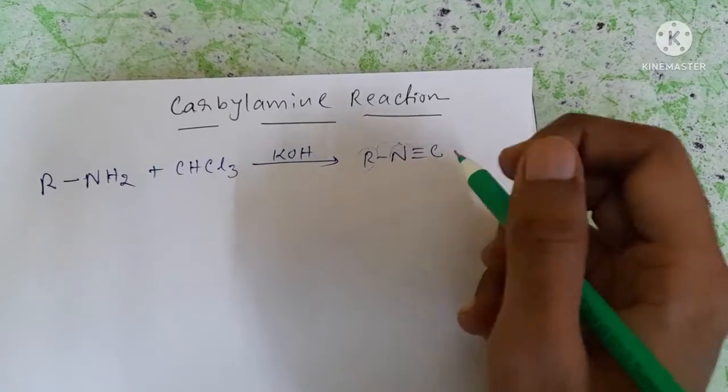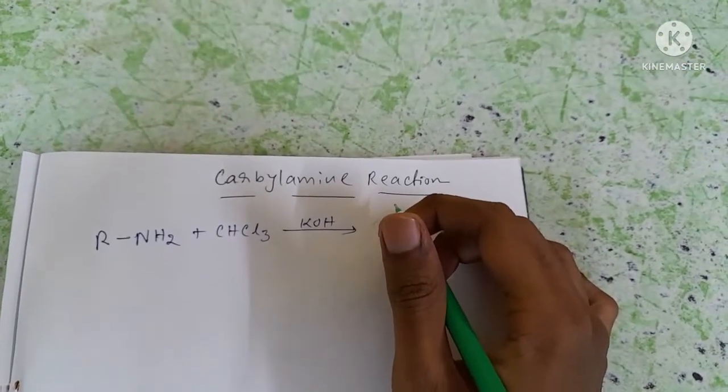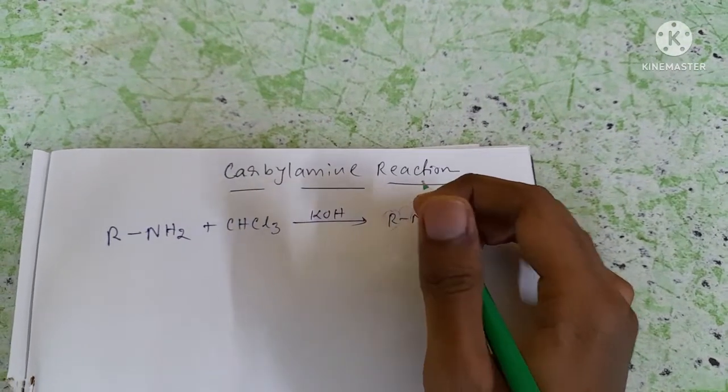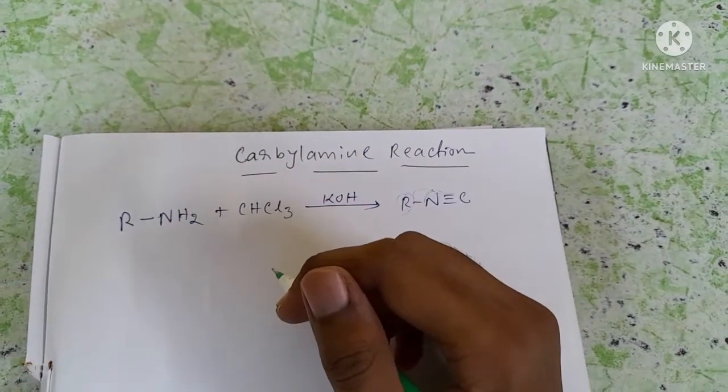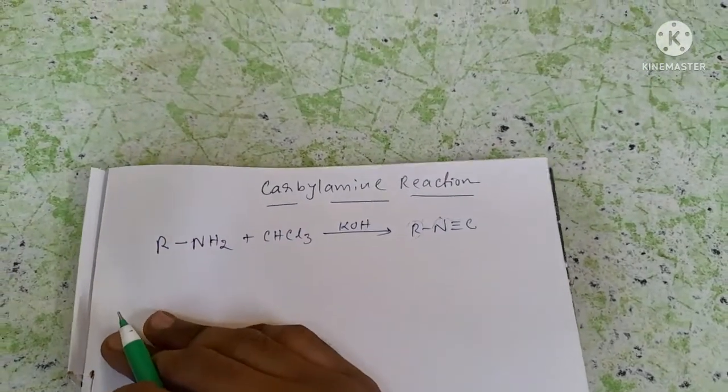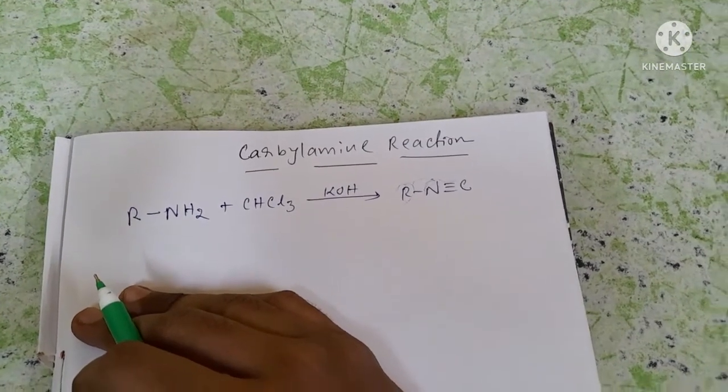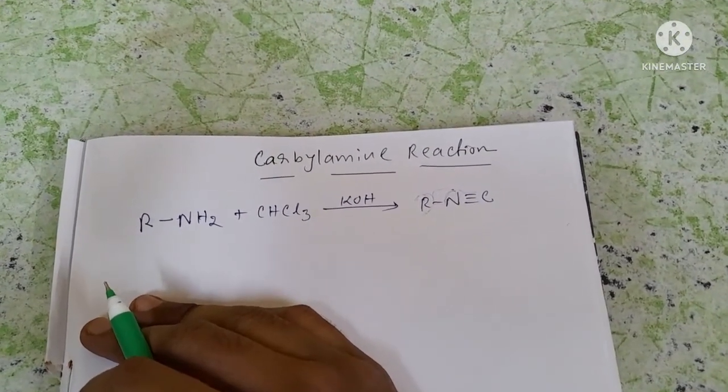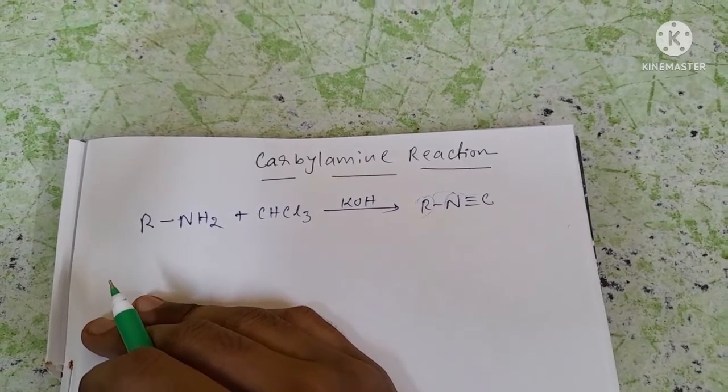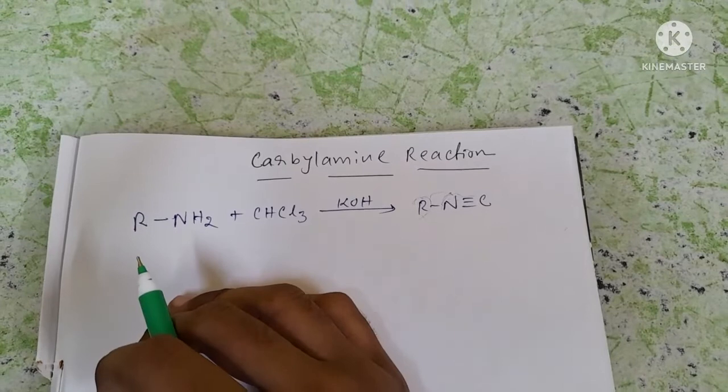The intermediate of this reaction is dichlorocarbene, which is a carbene. I previously talked about carbene intermediate reactions. Here, the dichlorocarbene intermediate attacks the primary amine as an electrophile, and through this the alkyl isocyanide is formed.